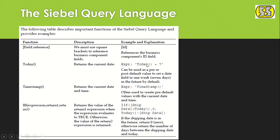The 'Today()' function gives the current server date and time. For If expressions, there are three parts: condition, return value if condition is true, and return value if false — like: If(condition, return1, return2). If condition is satisfied, return1 is given; otherwise return2.